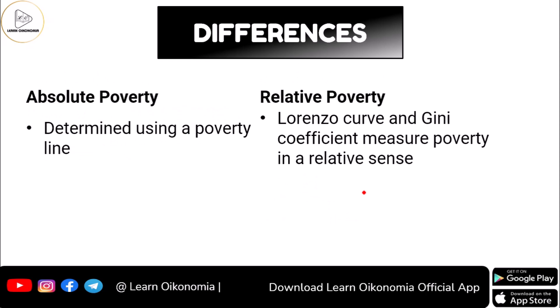In the case of absolute poverty, this is something you can determine using a very important tool called the poverty line. This is an imaginary, hypothetical line. If you are earning above this specified limit, you are considered APL, and if you are earning below this specified amount, you are considered BPL. Based on poverty line classification, you can have two types of people: those belonging to the BPL category and those belonging to the APL category.